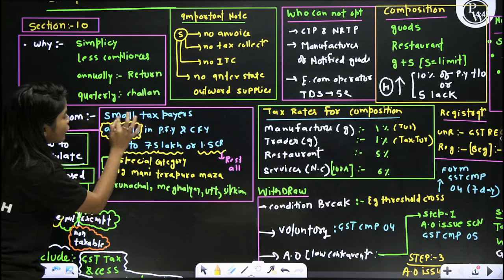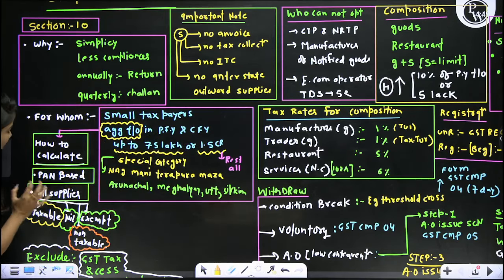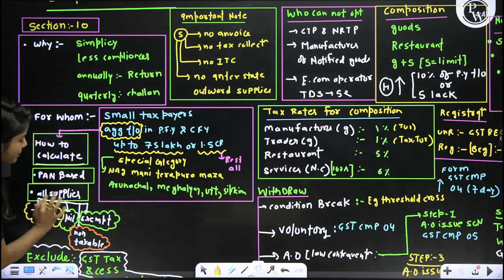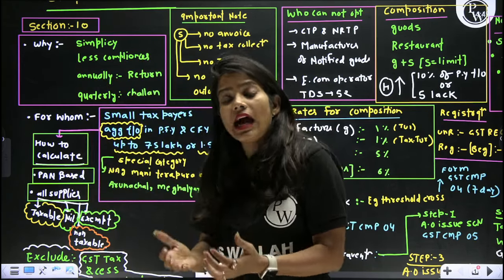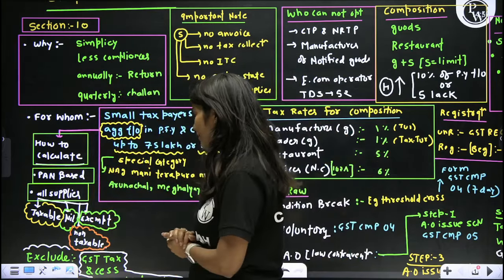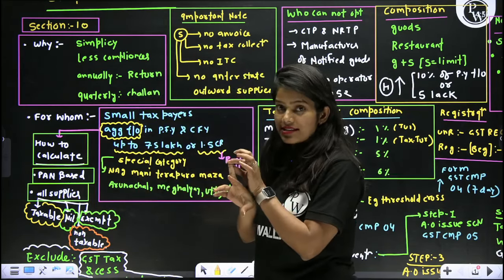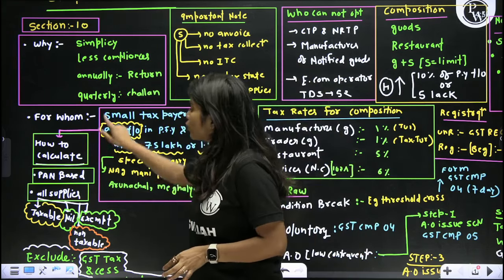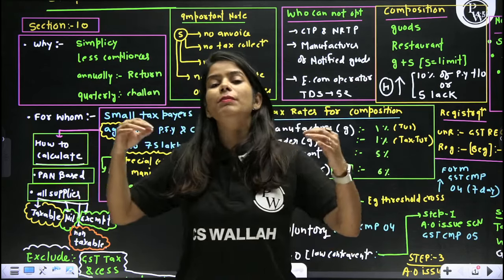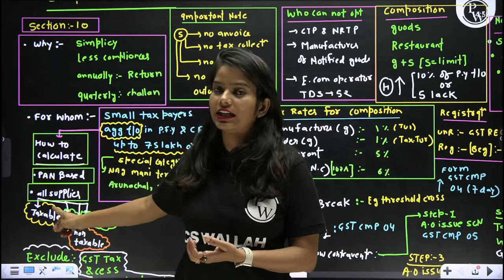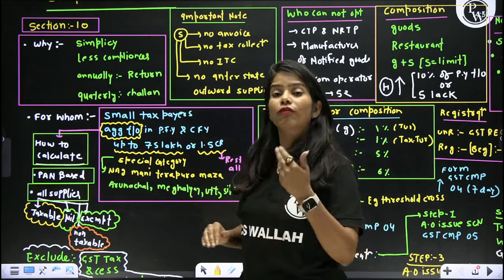Now the question is how the aggregate turnover will be calculated. The turnover is calculated on a PAN basis — we include all supplies, whether taxable, nil-rated, exempted, or non-taxable. What we do not include are GST taxes — whether CGST, SGST, UTGST, or IGST. This is how the turnover computation is done. Since it is PAN-based, all businesses across India are included. If the turnover exceeds 75 lakh or 1.5 crore, you will not get the composition scheme; if it remains within the limit, you will get it.